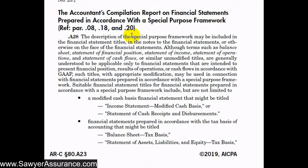In the financial statements, management is supposed to include a description of the special purpose framework. That description can be included in the financial statement titles, in the notes of the financial statements, or otherwise on the face of the financial statements. Financial statement titles such as balance sheet, statement of financial position, and statement of income are commonly associated with GAAP, so the titles would need to be modified to make it clear that a special purpose framework was used and that the statement was not prepared in accordance with GAAP.